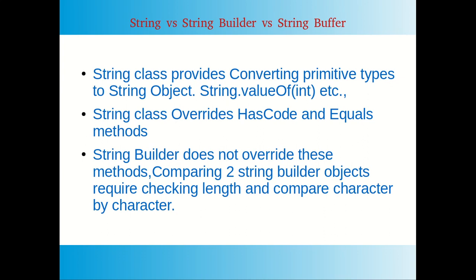String class provides some static methods for converting from primitive types or built-in types into String objects. For example, String.valueOf() accepts an integer, boolean, character, or even a character array and converts that value into a String object.